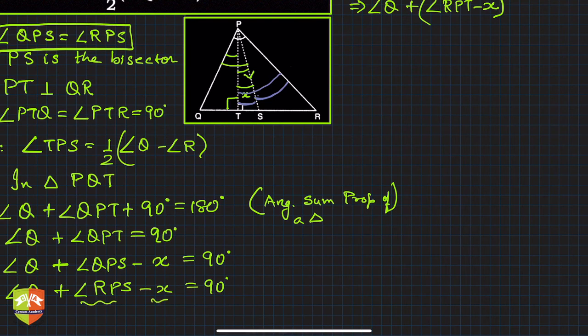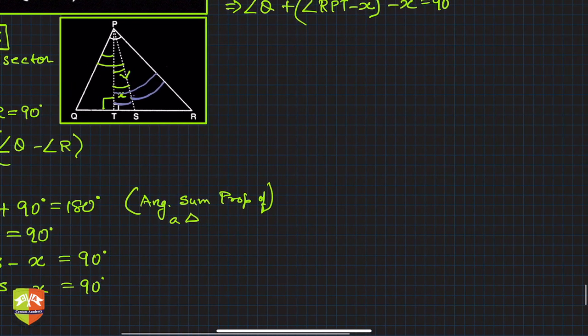So ∠Q + ∠RPT, that is ∠RPS, and then I add another x. So write another x like that, is equal to 90 degrees, isn't it? So this implies ∠Q + ∠RPT - 2x = 90 degrees.